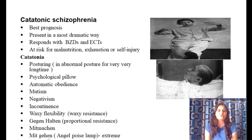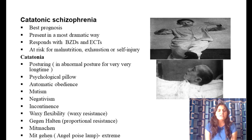Catatonic schizophrenia has the best prognosis among the subtypes, though patients present in a dramatic way. Patients respond well to benzodiazepines and electroconvulsive therapy (ECT). However, these patients are at risk for malnutrition, exhaustion, and self-injury.